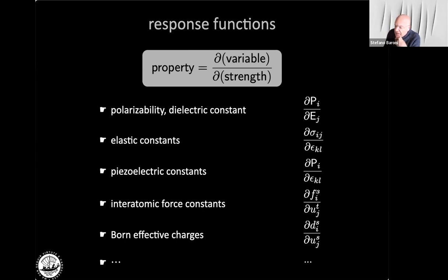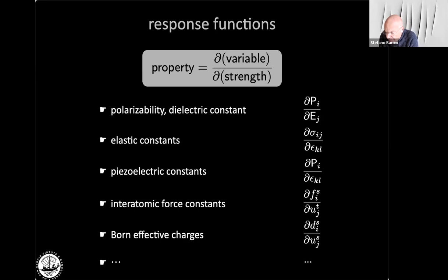We can equally think of derivatives of microscopic properties, such as interatomic force constants, defined as the derivative of the force acting on one atom when a different atom is displaced from equilibrium. Born effective charges are defined similarly as derivatives of the dipole of the system with respect to atomic displacements.